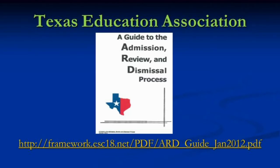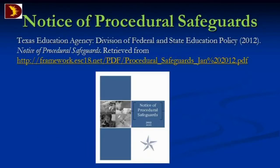Some resources that parents receive are also very helpful for you. These can be accessed through TEA or through the Special Education Department website as a guide to the Admission, Review, and Dismissal process — basically everything a parent needs to know, you should probably know too. The notice of procedural safeguards is also a parent document with helpful information about timelines and rights. We can't go wrong if we're all on the same page regarding rights and responsibilities.